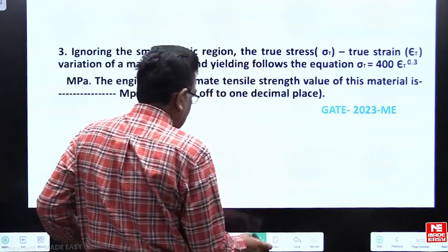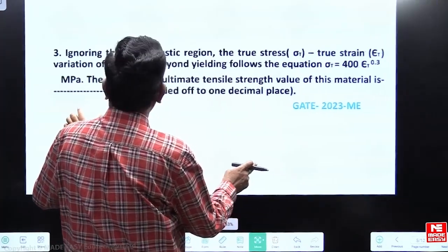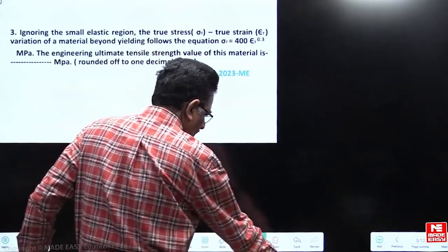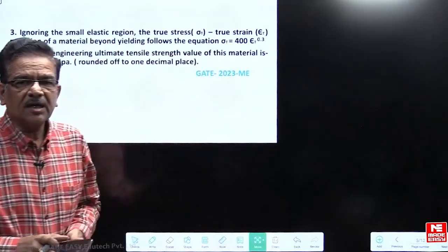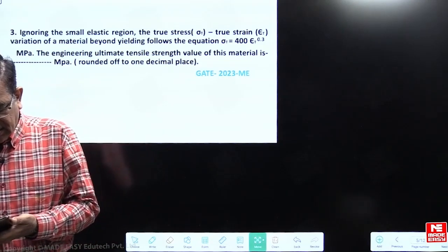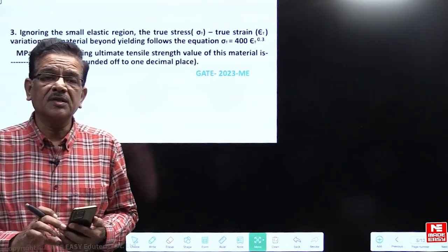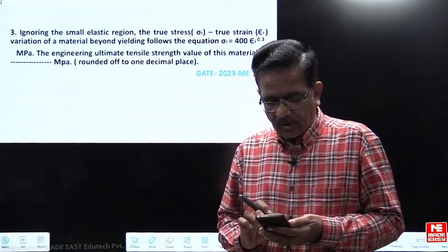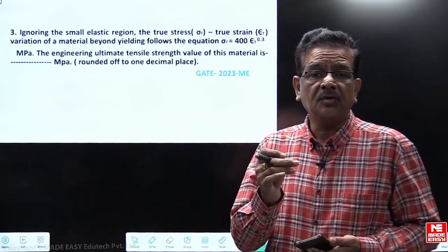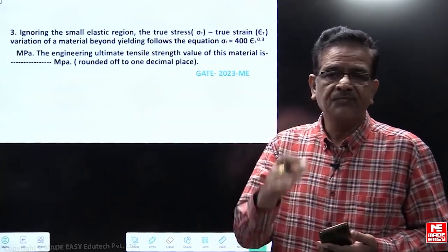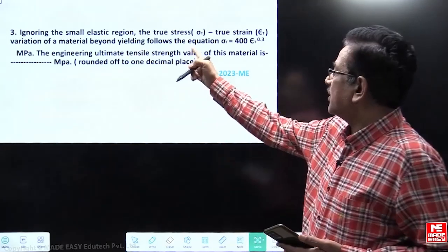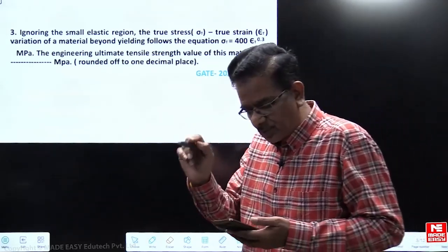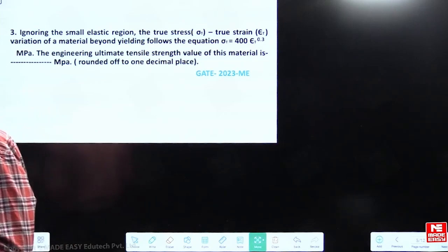This question comes from the chapter on mechanical properties of materials. In the discussion on mechanical properties, we focus not only on elastic properties but also on the permanent deformation region. This permanent deformation region evaluation becomes important because we need to concentrate on the condition for necking and the Hollomon equation — also called the power law equation. Questions based on this equation appear several times in competitive examinations.